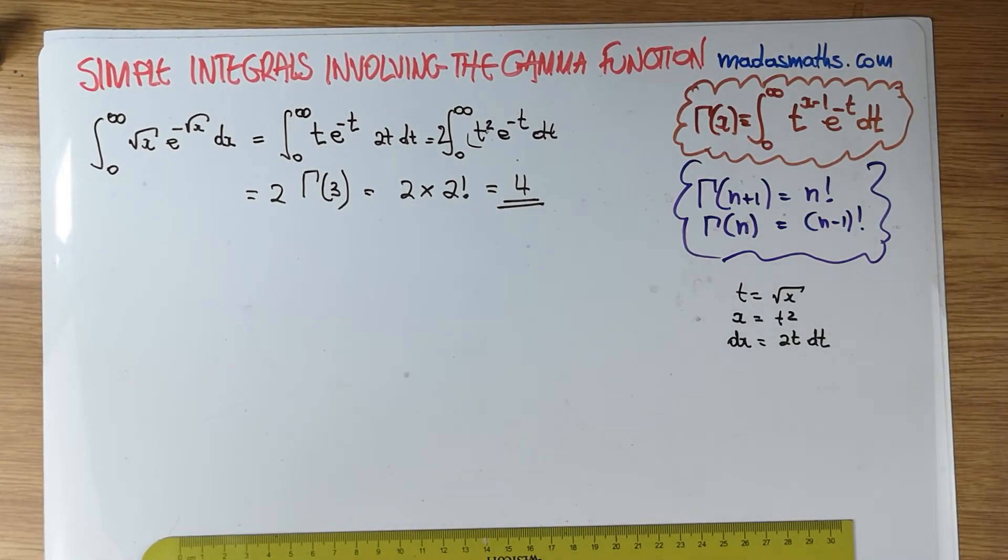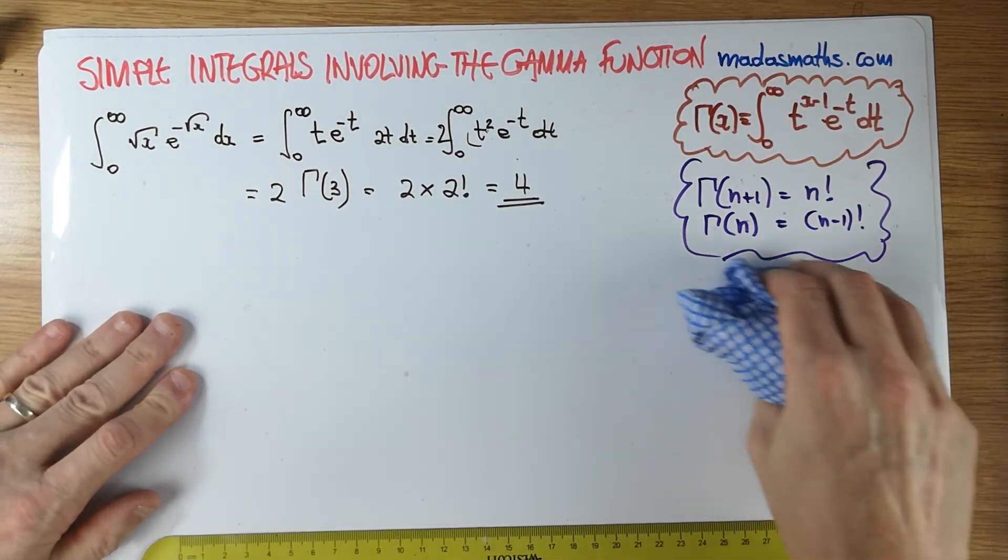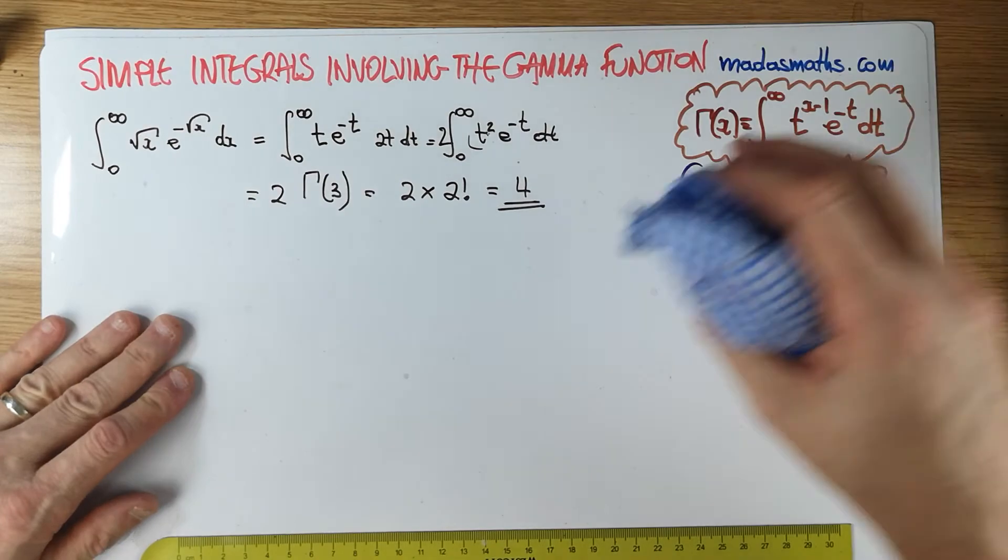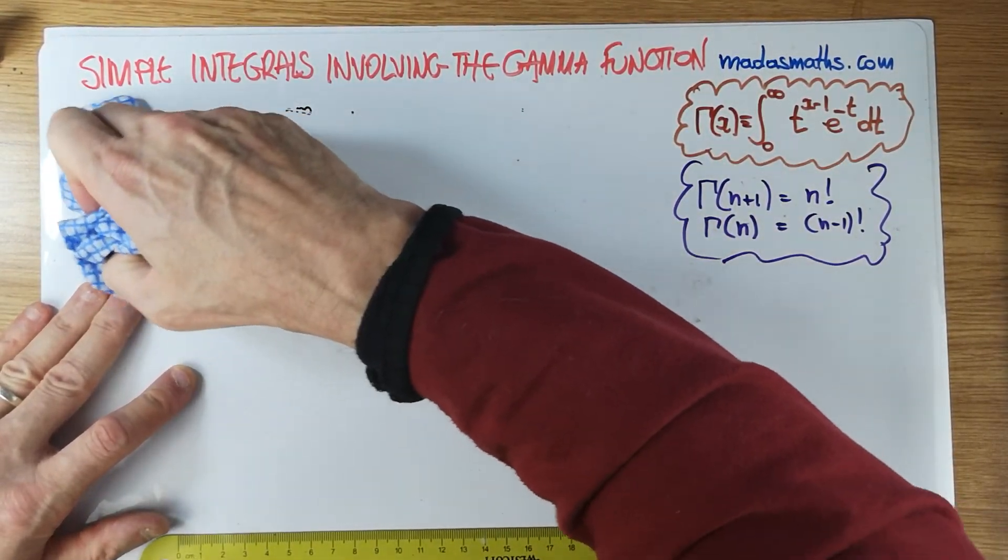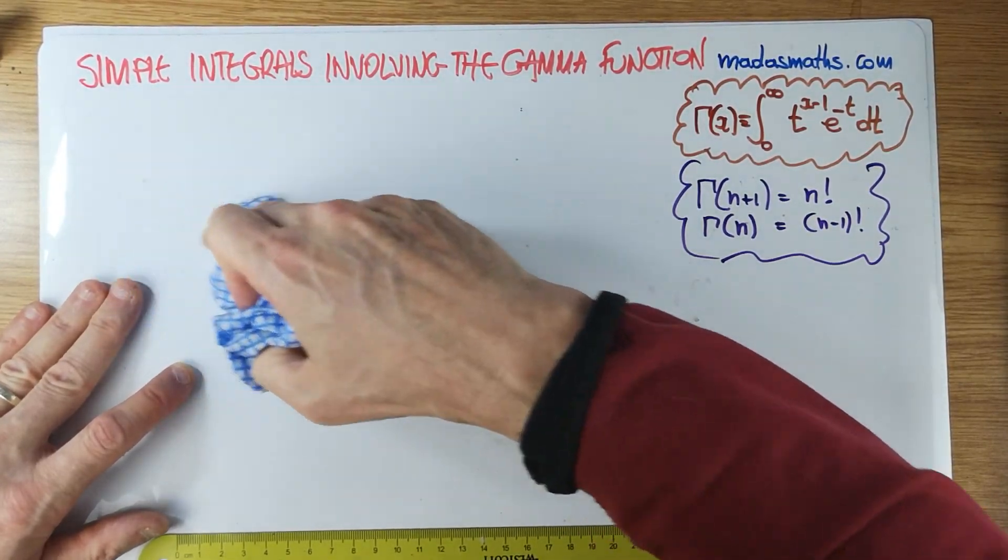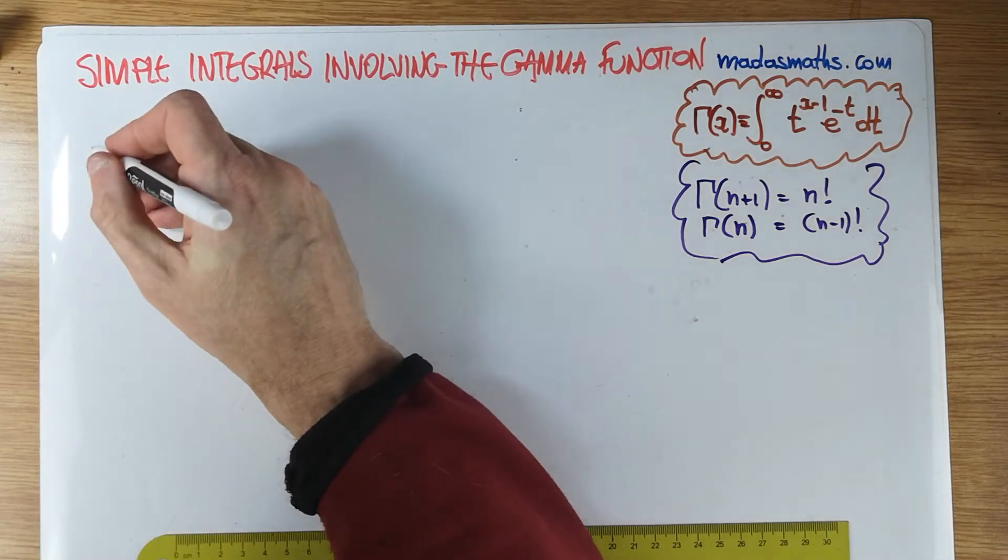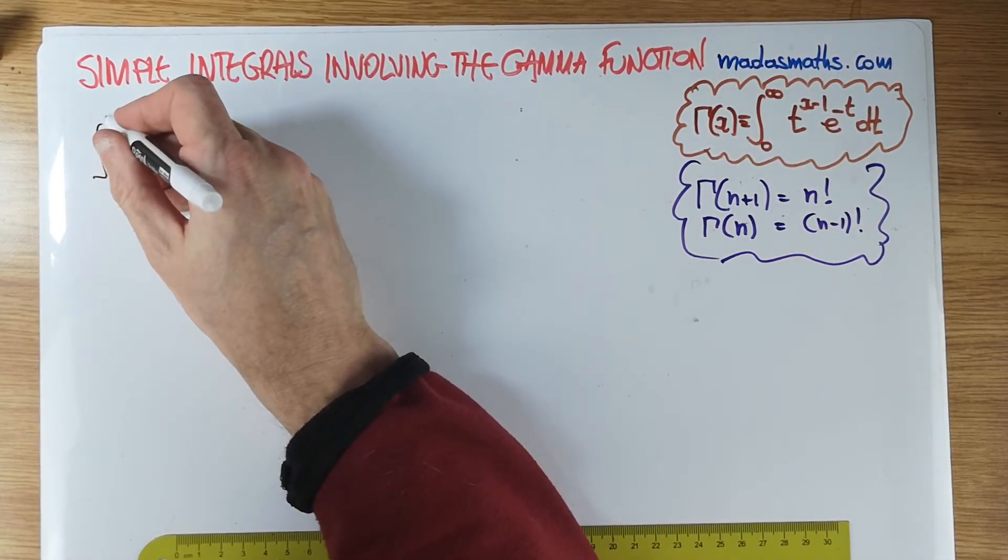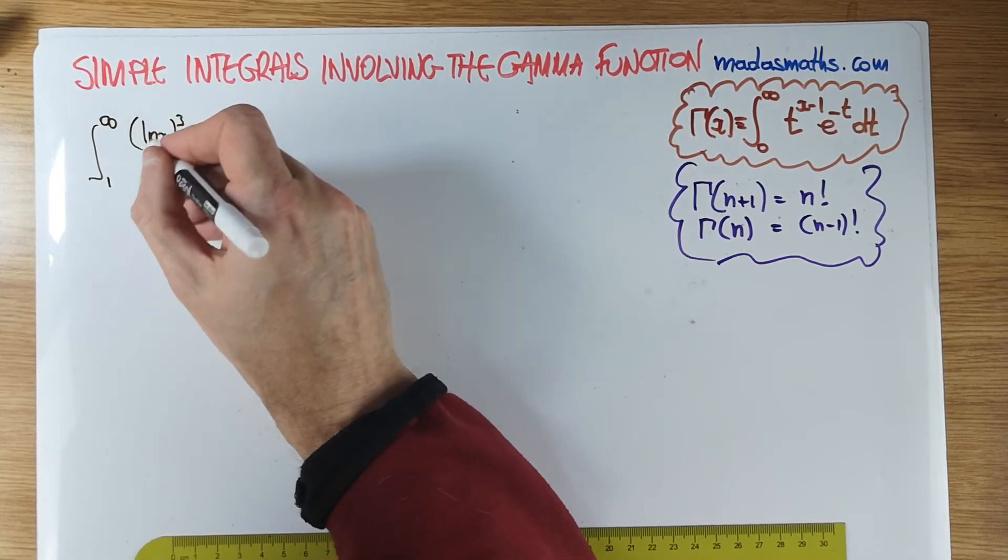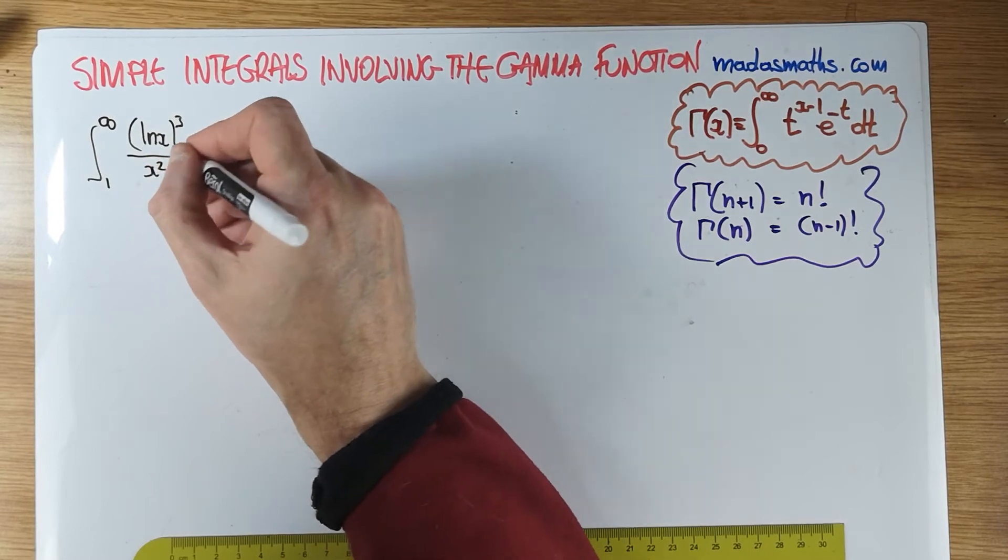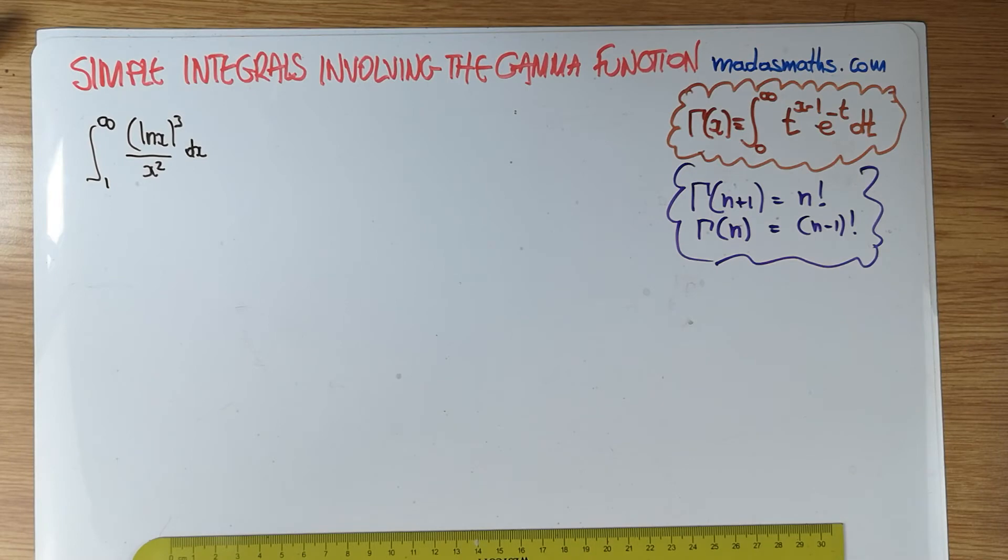Let's do one more of these. Let's do something that's a little bit different. So what's the third one? Let's say we have an integral from 1 to infinity. And we're having the log of x, all cubed over x squared. That's a little bit different, particularly because of the limits.